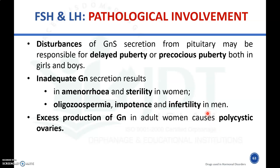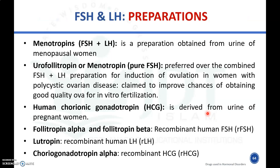There are different marketed preparations for deficiency of FSH and LH. Menotropin is a preparation of FSH and LH obtained from the urine of menopausal women. Urofollitropin, or purified menotropin, is a pure form of FSH preferred over the combined FSH preparation for the induction of ovulation in women with polycystic ovarian disease. It is claimed to improve the chances of obtaining good quality ova for in vitro fertilization.